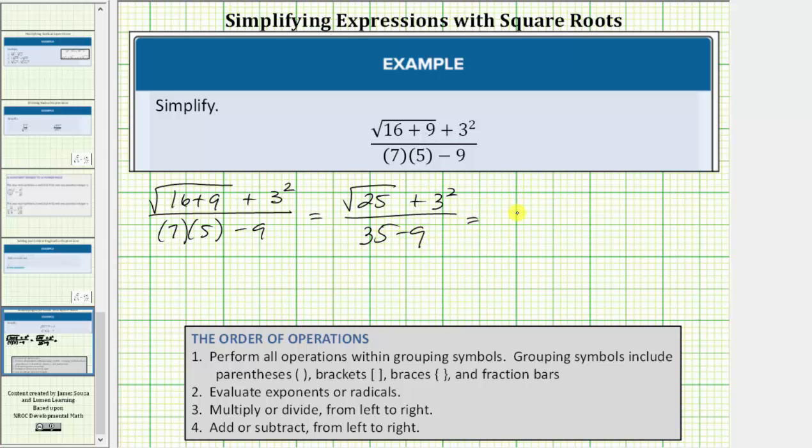Now going back up to the numerator, we need to evaluate the square root and the exponents. Well, the square root of twenty-five is asking what number times itself is equal to twenty-five. And because twenty-five is a perfect square, meaning it's equal to five times five, which is equal to five squared, the square root of twenty-five is equal to one factor of five.